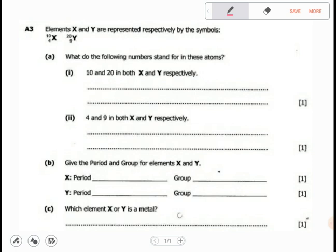We can clearly see there the numbers on top and the numbers at the bottom. What do the following numbers stand for in these atoms? The number 10 and 20 respectively.